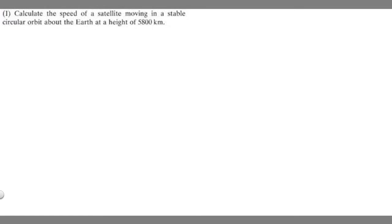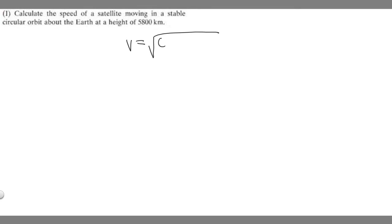In this problem, we're told to calculate the speed of a satellite moving in a stable, circular orbit about the Earth at a height of 5,800 kilometers. We're trying to find the speed. You can find the speed of a satellite moving in a stable orbit around the Earth, or any planet, by taking the square root of G — the gravitational constant — multiplied by the mass of the planet, divided by the radius, which is the distance between the satellite and the center of the planet.